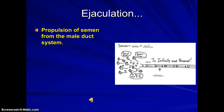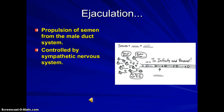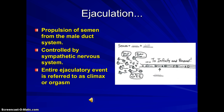Ejaculation is semen being secreted from the epididymis through the vas deferens out the urethra. This process is controlled by the sympathetic nervous system and is referred to as a climax or orgasm in a male. The sperm are released and will swim off, possibly causing fertilization if it happens during the proper time in a female's cycle.